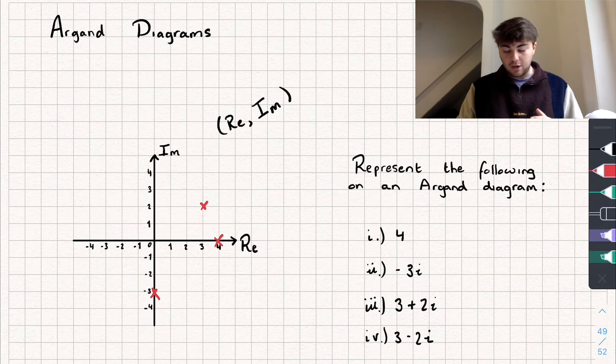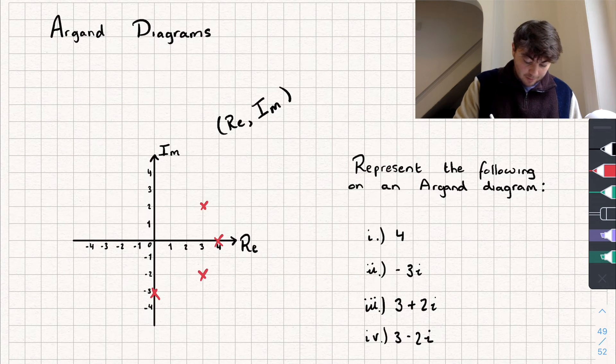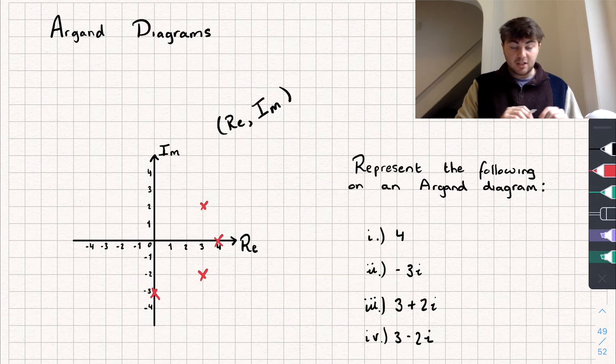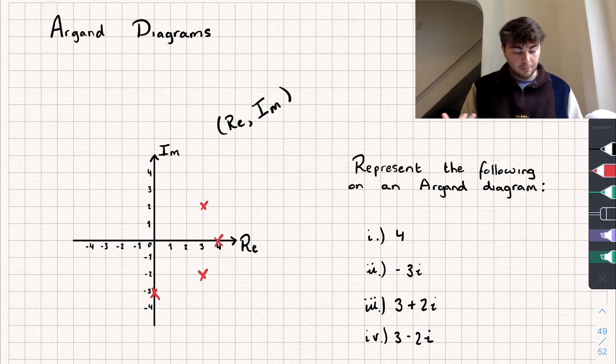And then its conjugate is next, so that's 3 minus 2i, and that's going to be this point here. So it's pretty easy. Now you might notice that a conjugate to a complex number has a line of symmetry in the real axis, so that can make it quite easy when we're drawing complex numbers.